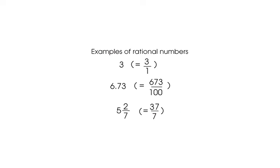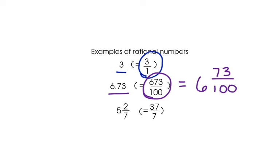Here's a little chart with some examples of rational numbers. Notice that this whole number 3 can be written as 3 over 1, so it's a rational number. 6 and 73 hundredths can be written as 673 over 100. It could also be written as 6 and 73 hundredths, still a rational number, and 5 and 2 sevenths can be written as an improper fraction, 37 sevenths, also still a rational number.